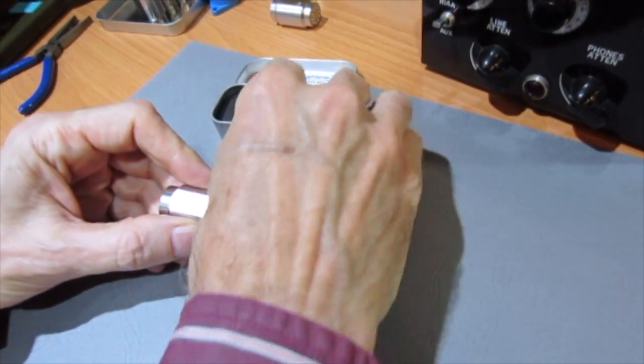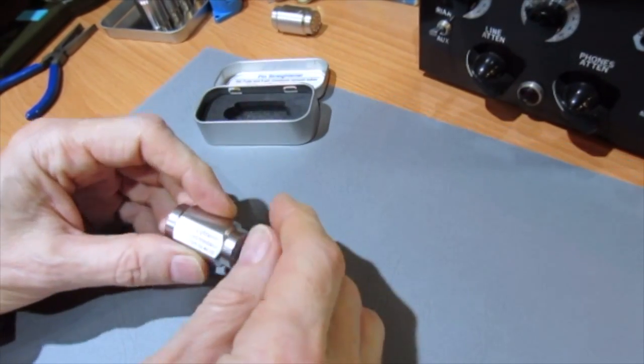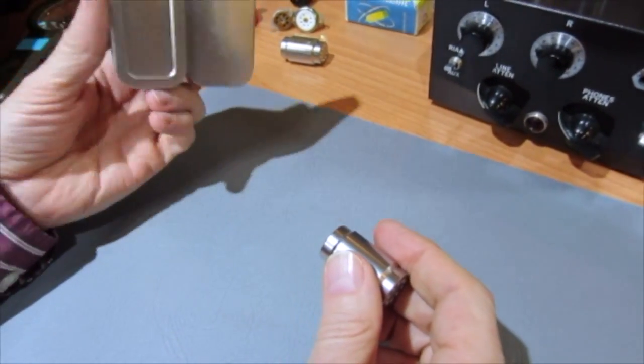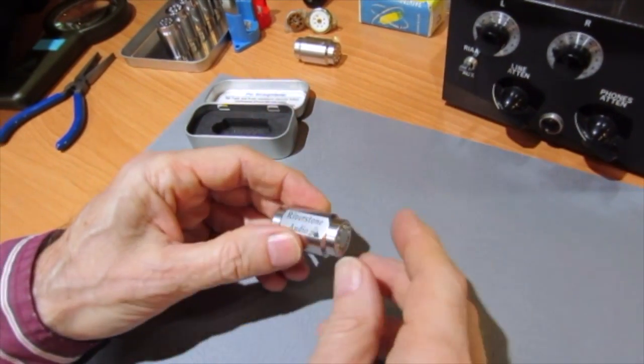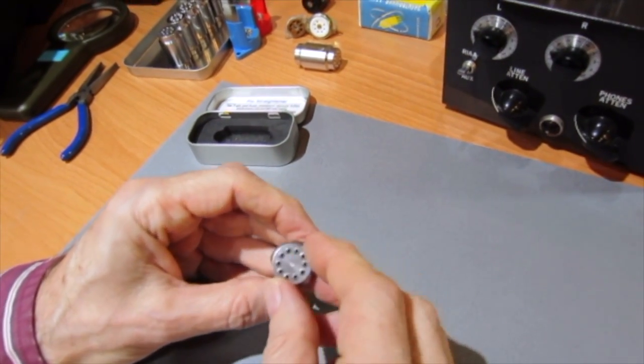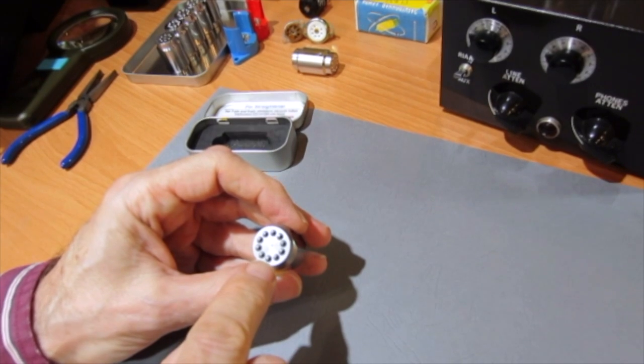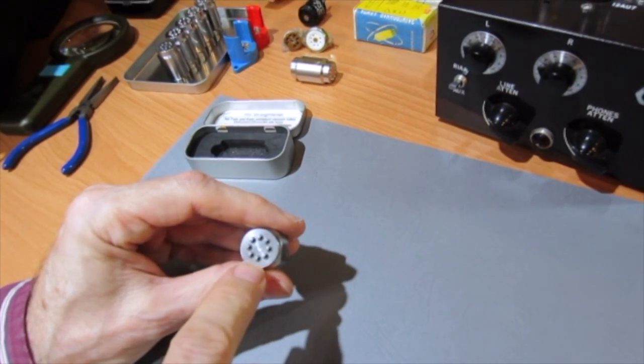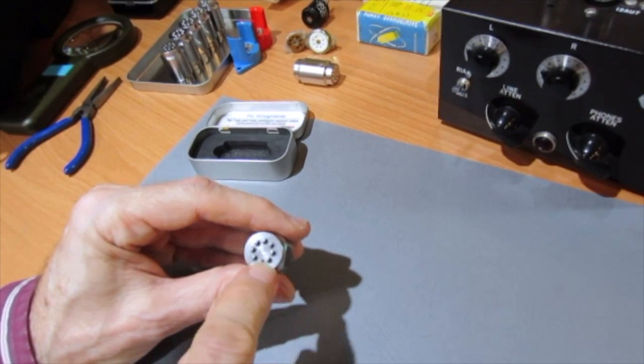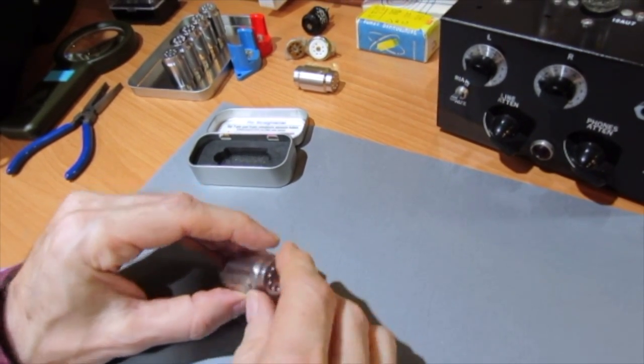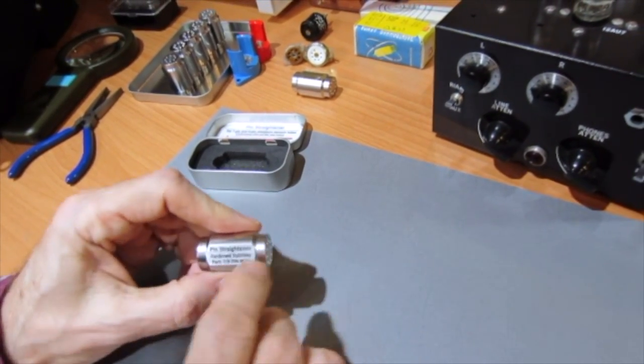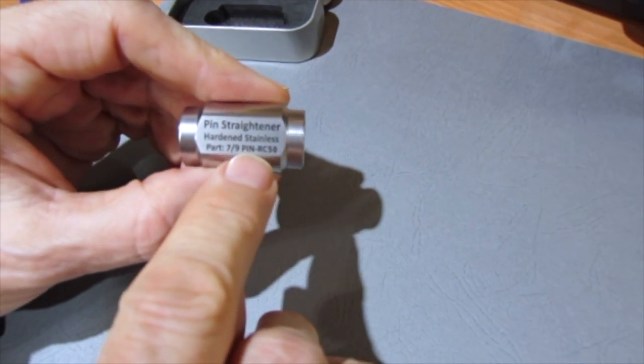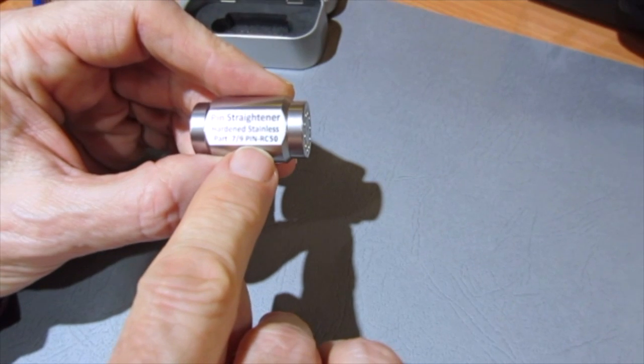The pin straightener itself. We wanted to include a box because I've used these for many years, and I'd always wish some of the vintage ones would come in a storage box. One end is for the 9 pin miniature tubes, the other end for the 7 pin miniature tubes. This is machined out of a hardened stainless steel.